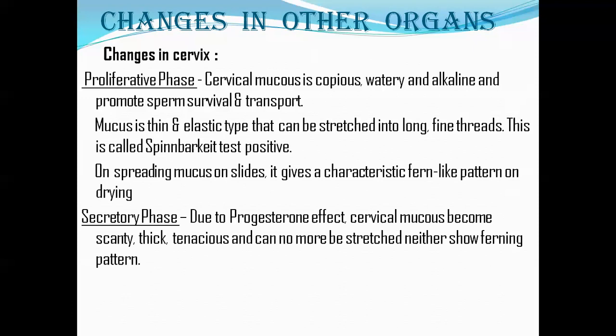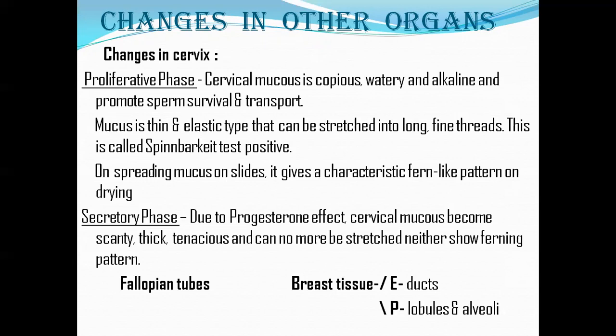In the secretory phase, due to progesterone, the cervical mucus becomes scanty, thick, and tenacious — cannot be drawn into threads or show the ferning pattern. This change from proliferative to secretory phase reflects that the alkaline, watery, copious secretion promotes sperm survival during the proliferative phase, but once fertilization may have occurred, progesterone changes the mucosa's characteristics. In fallopian tubes, ciliary activity is enhanced during the proliferative phase to aid sperm movement, but this is lost in the secretory phase.